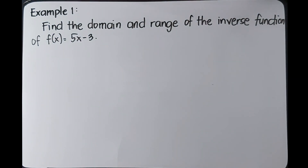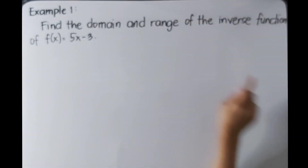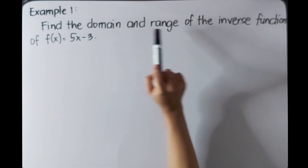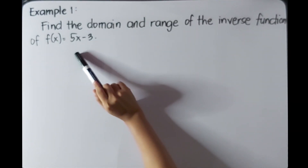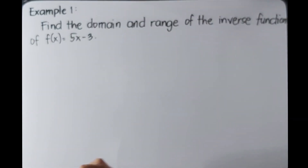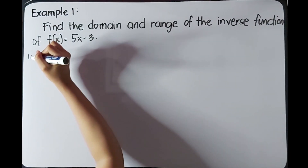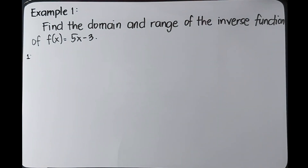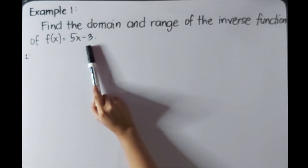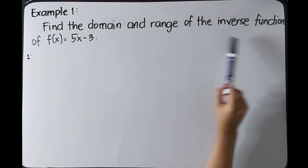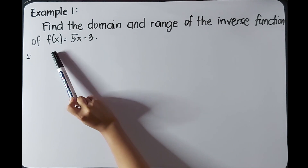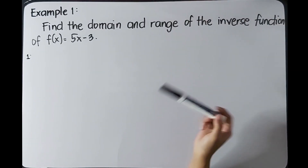Let us have examples in finding the domain and range of the inverse function. Example number one: find the domain and range of the inverse function of f(x) = 5x - 3. This is the first function from our previous lesson 10. The first step is to get the domain of this function, since it is also equal to the range of its inverse function.